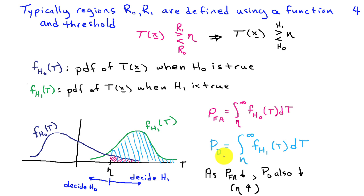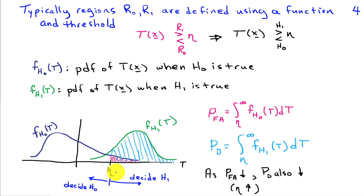The probability of detection is when H1 is true and we decide H1. Since H1 is true, the test statistic T has the green density F_H1, and we decide H1 when T is to the right of threshold eta. So the probability of correct detection is the area shaded in blue, written as the integral from eta to infinity of F_H1(T) dT. This diagram shows the interplay between PFA and PD: as we move eta to the right, decreasing PFA, the probability of detection also decreases because both shaded areas shrink together.